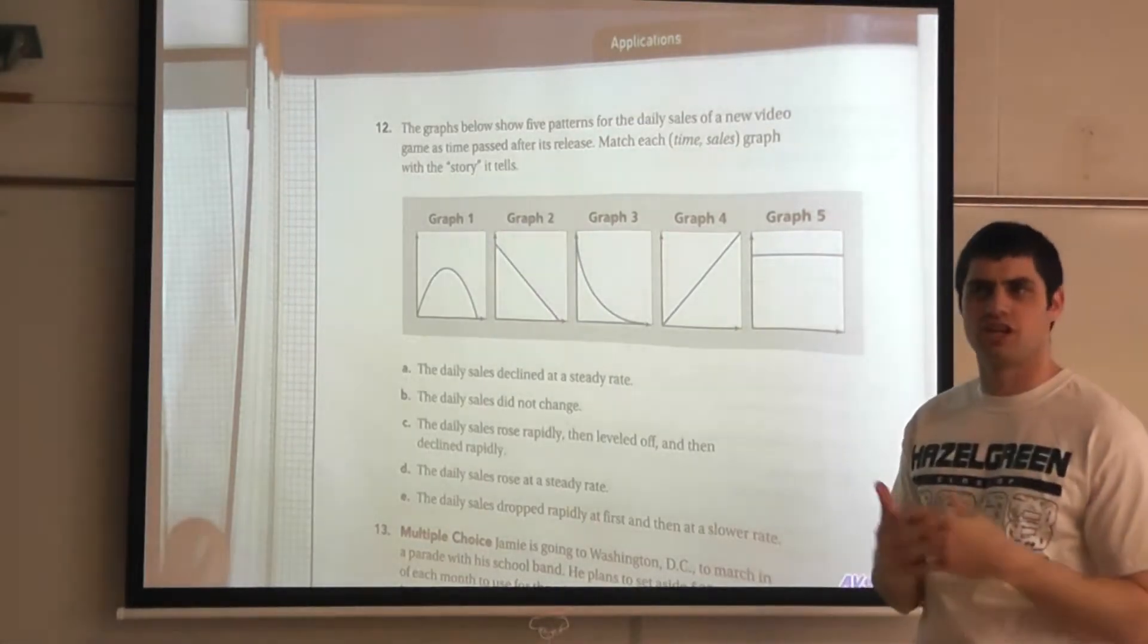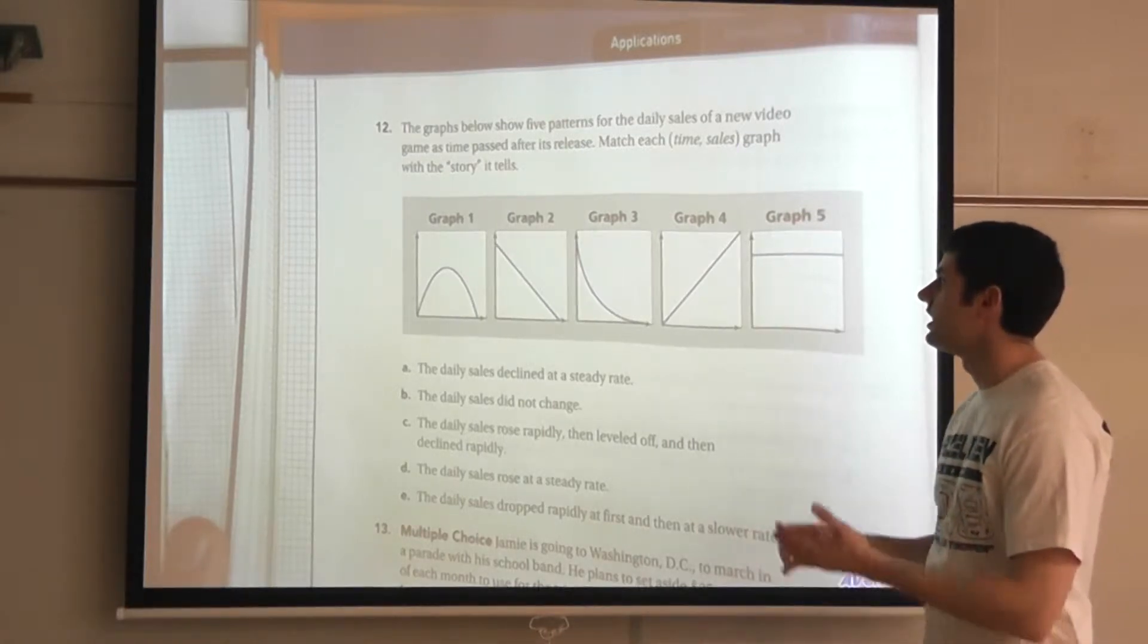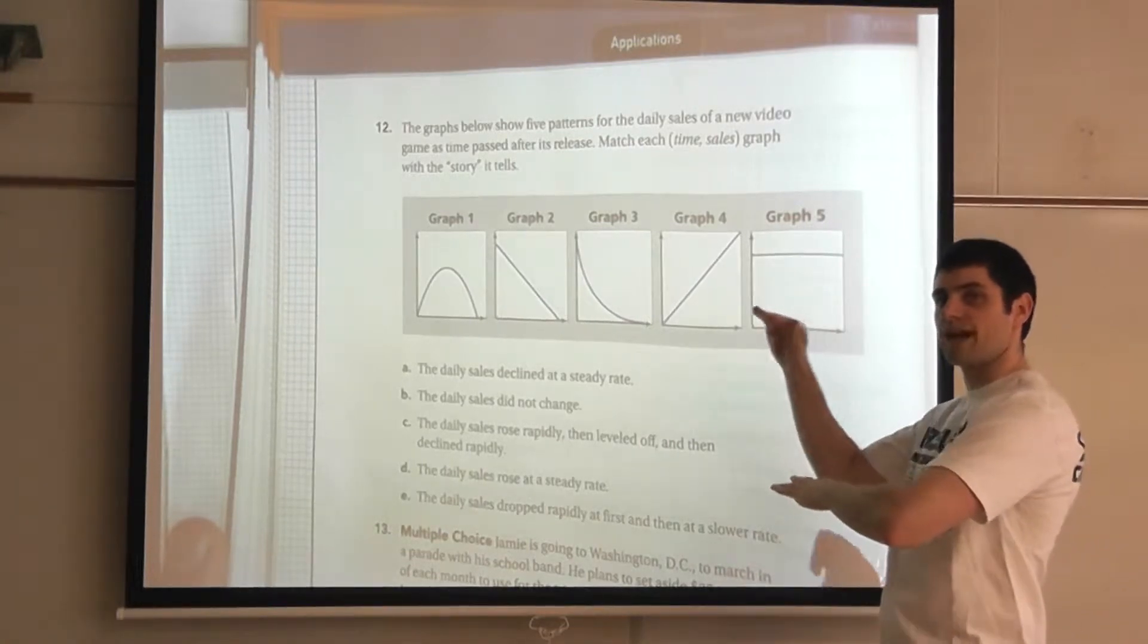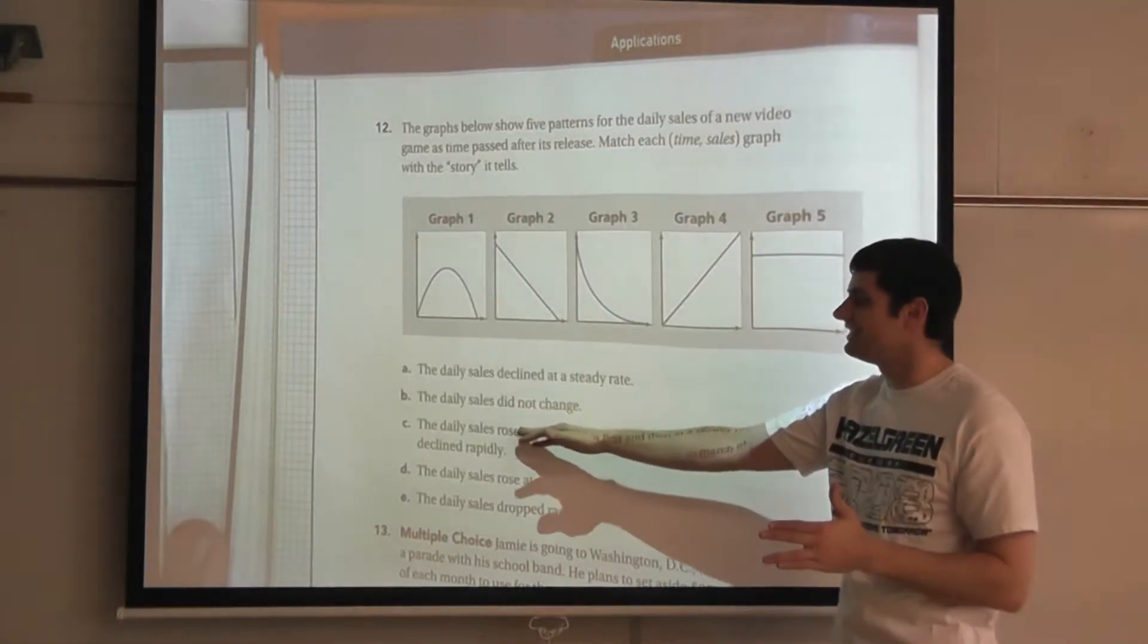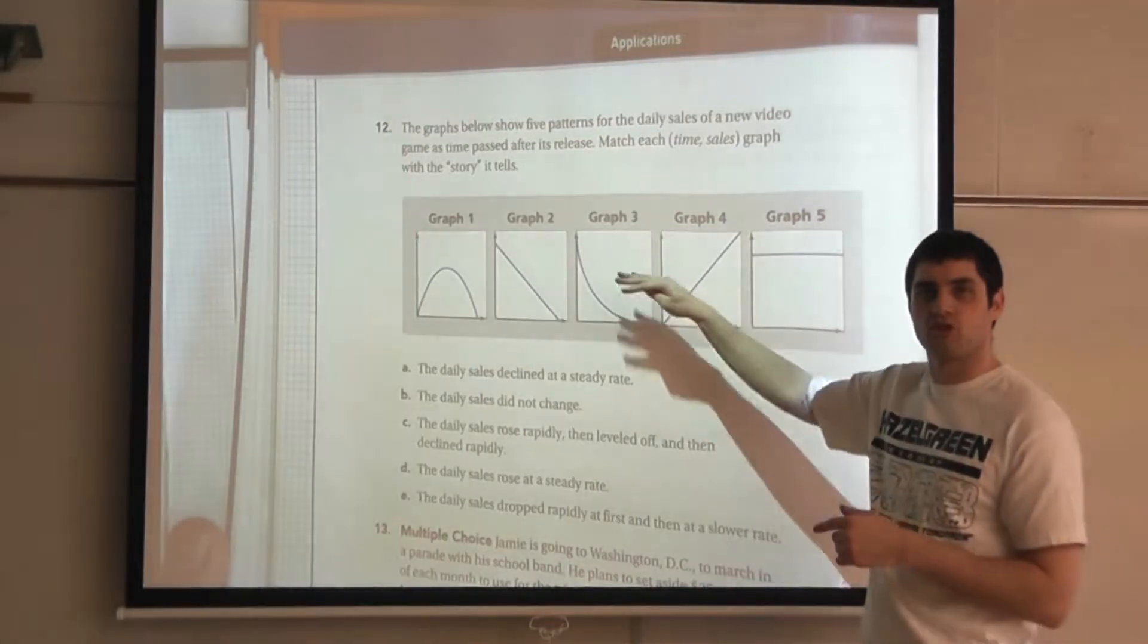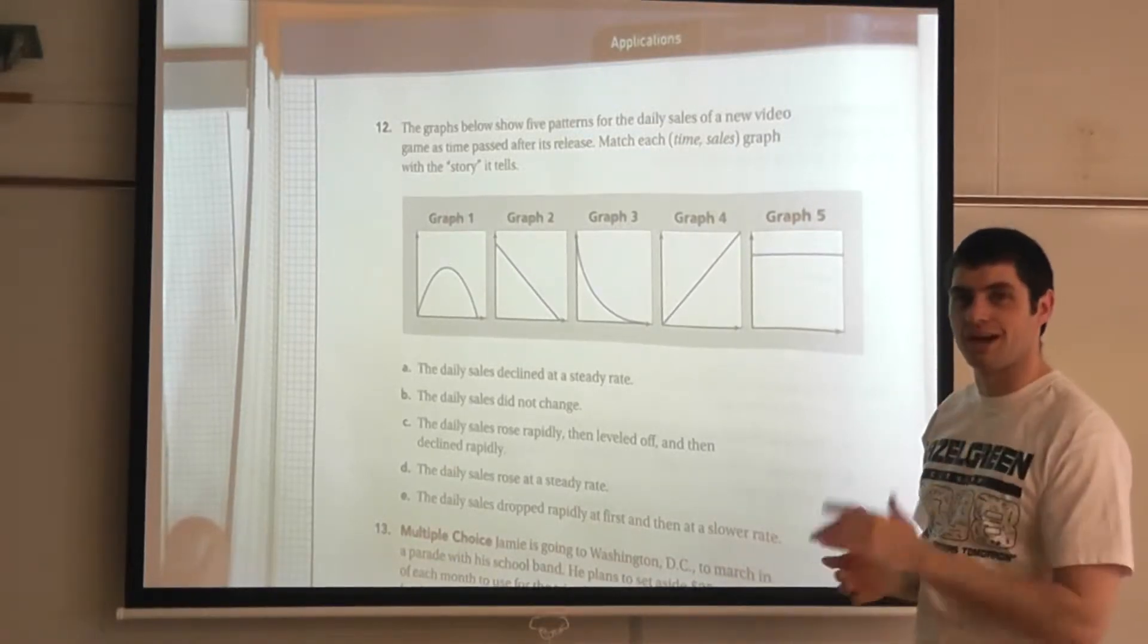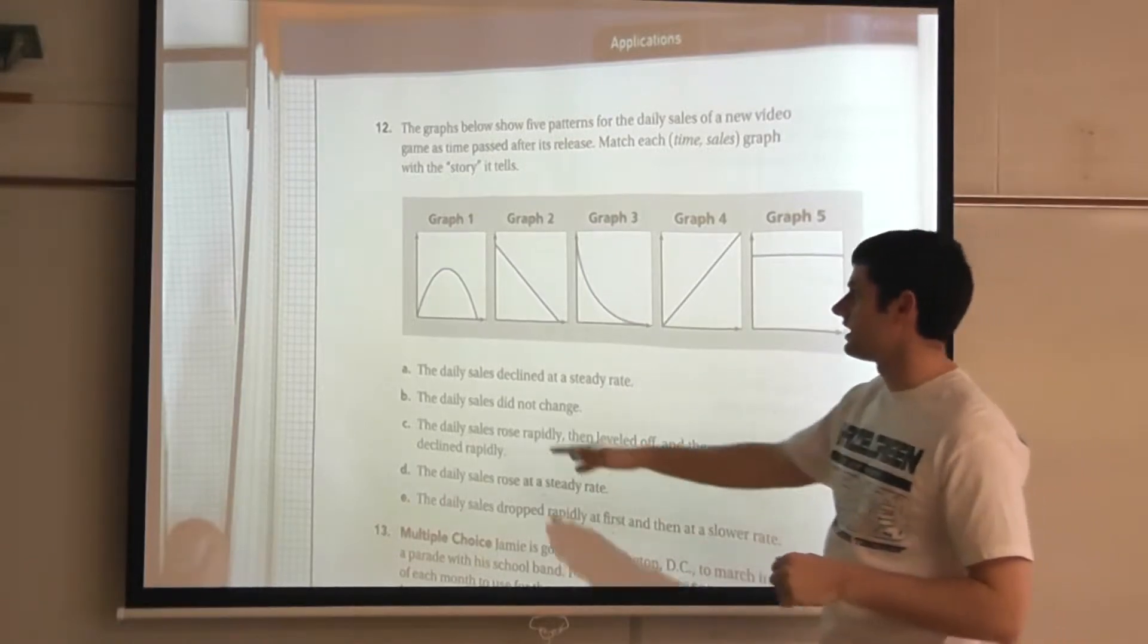Match each time and sales graph with the story it tells. So remember back to investigation 1, we talked about the bike tours. We looked at graphs, we looked at tables, we looked at written notes or stories. So a story can match with the graph with exactly what's happening. And each one of these A, B, C, D, and E actually match with one of the graphs. These graphs tell a story and these stories tell about the graph. I'm going to do the first one for you.